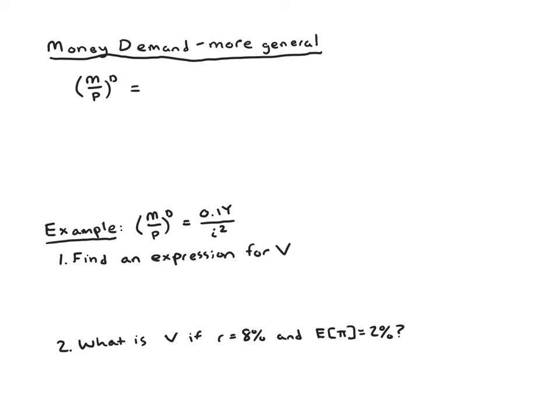So presumably you would want to hold less money the higher the interest rate gets. And we'd like our money demand equation to reflect that. So the traditional notation is we say money demand is a function of that nominal interest that's like the penalty for holding money. It's the opportunity cost of holding money and, of course, real GDP like before.